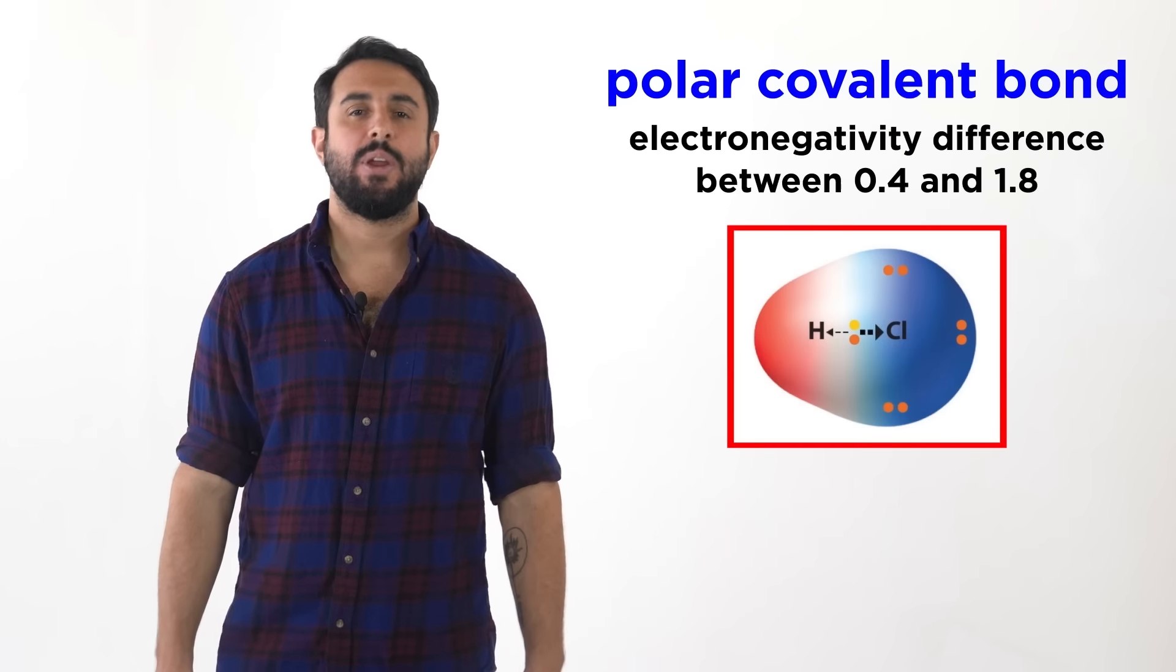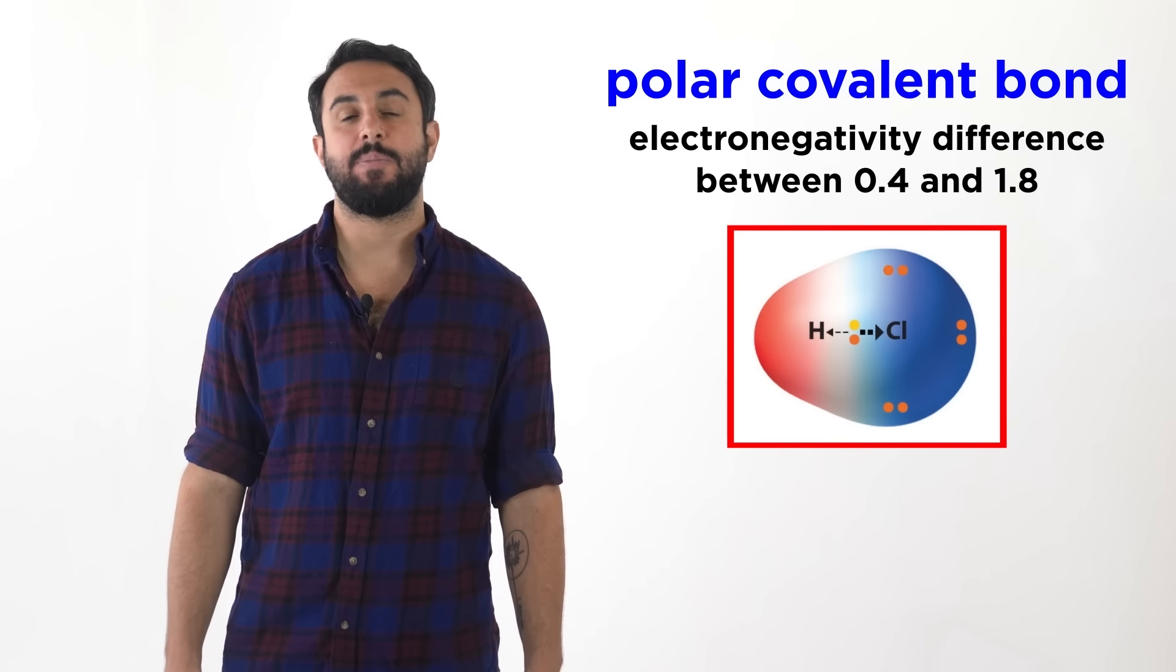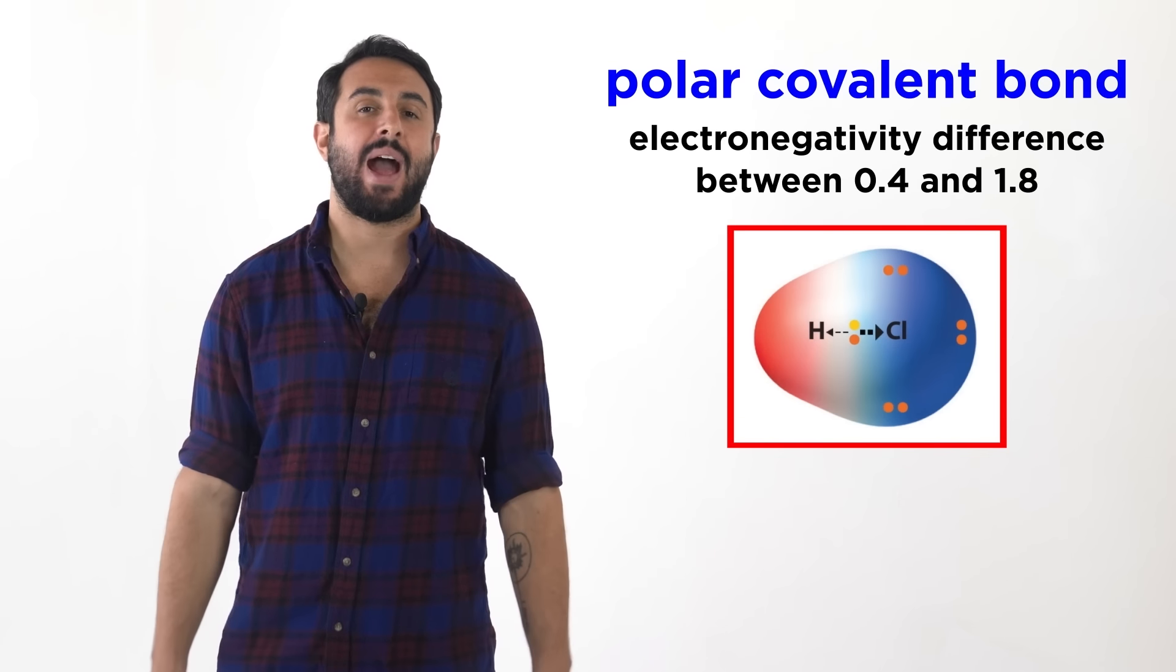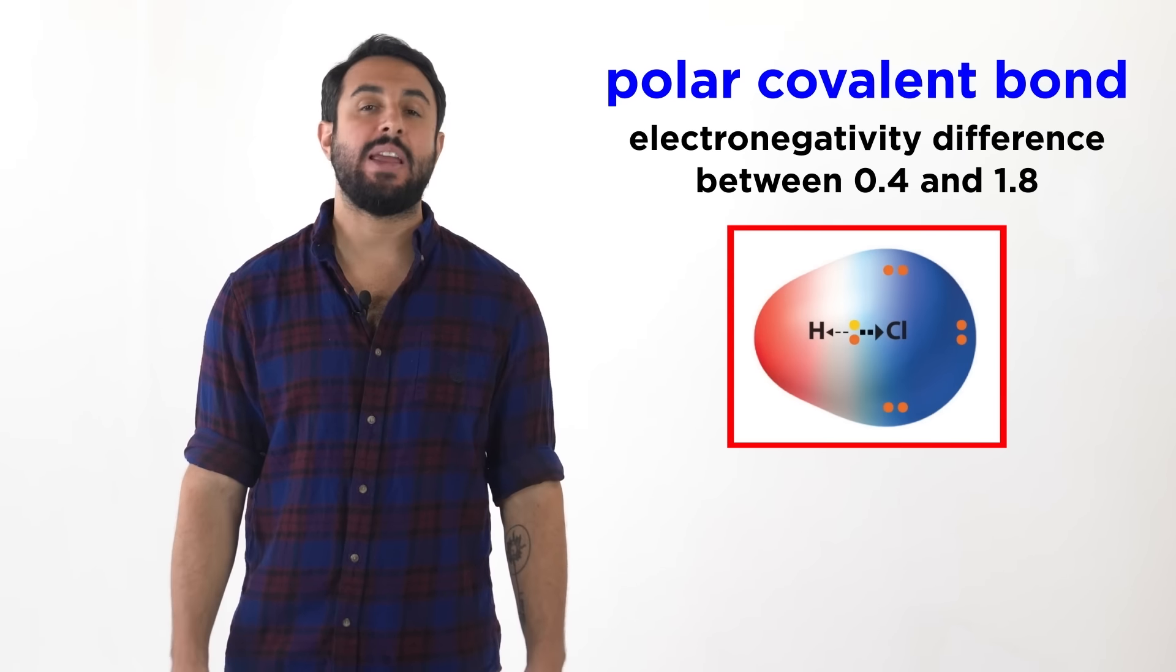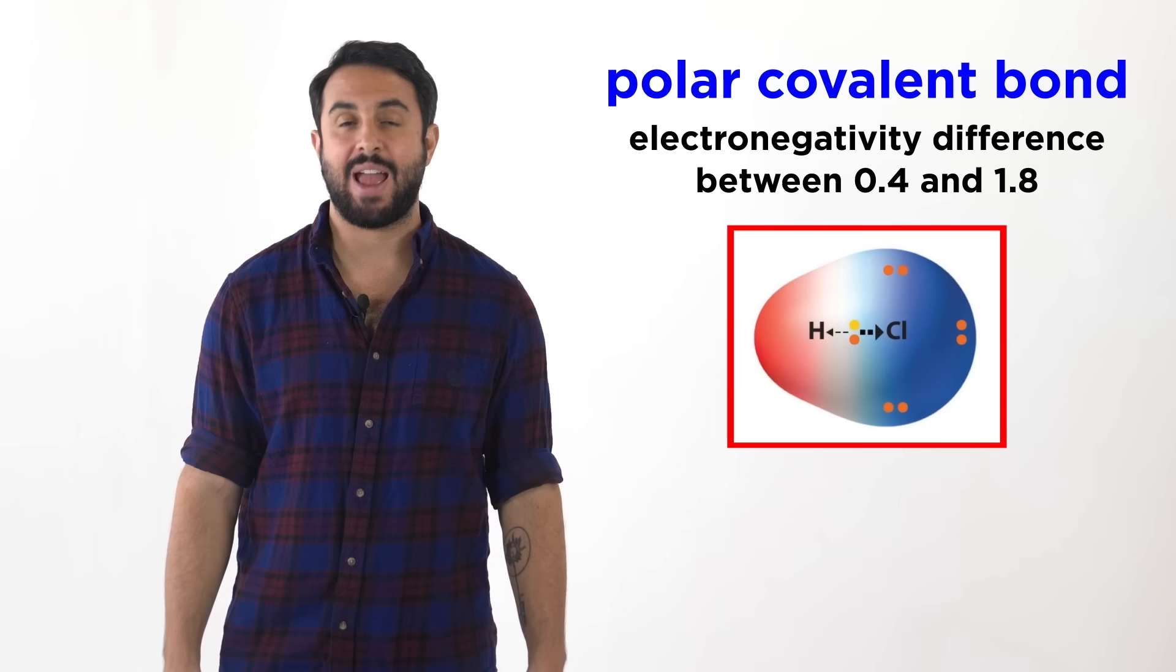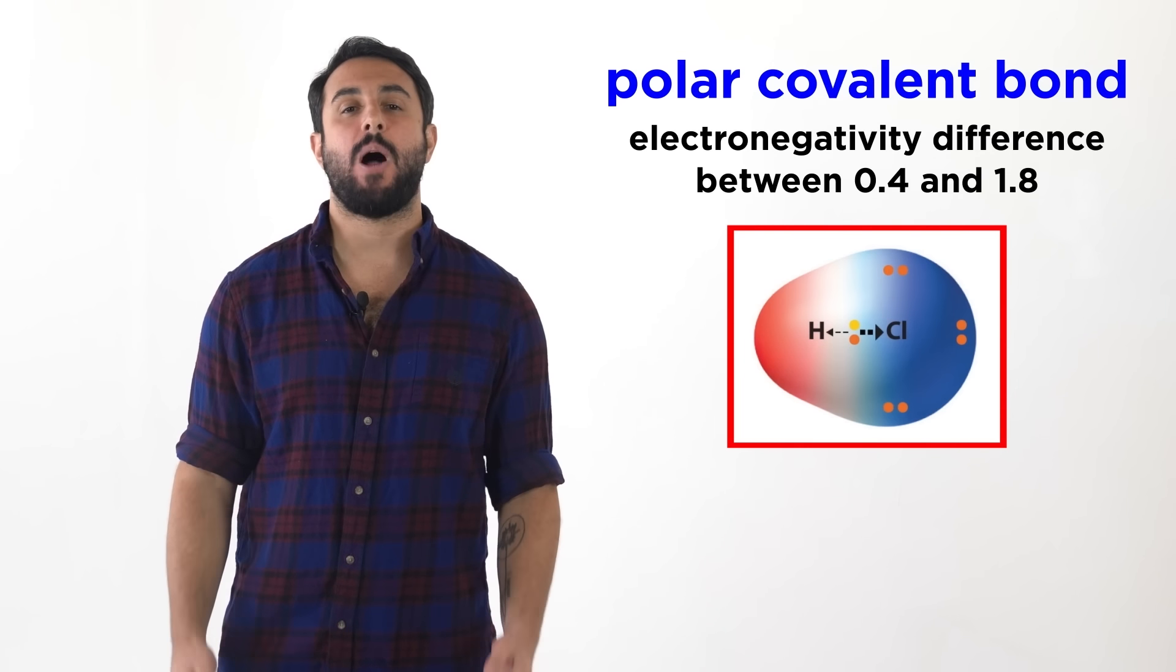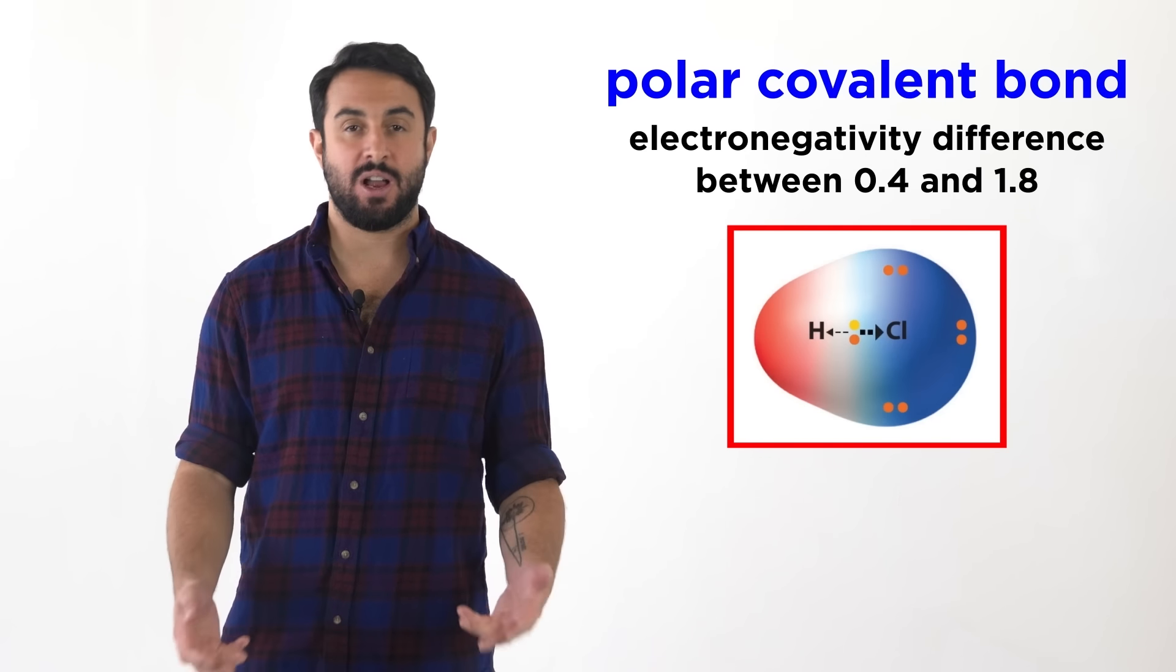Professor Dave and Chegg here. We know how to use electronegativity values to determine what type of bond will form between two atoms, and we know that if the difference in electronegativity between two atoms is somewhere between around 0.4 and 1.8, they will form a polar covalent bond in which the electrons are shared but unevenly.